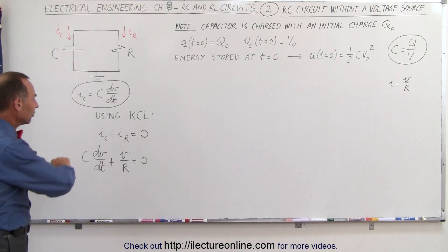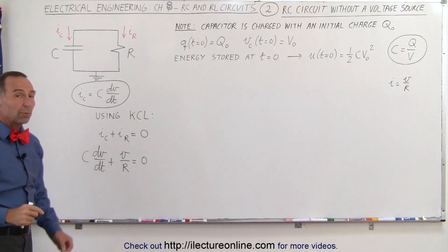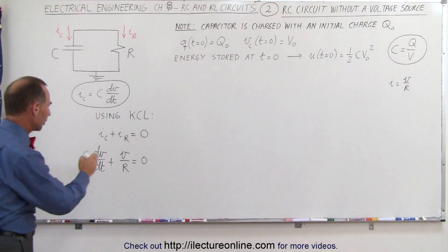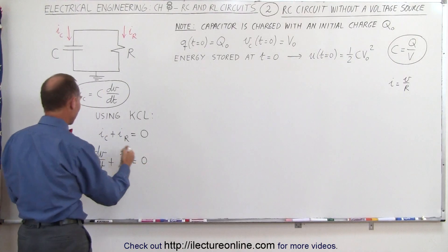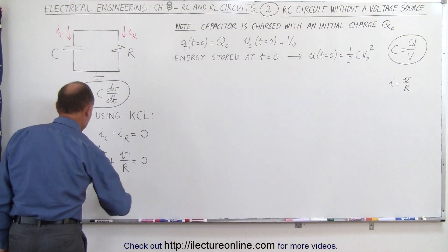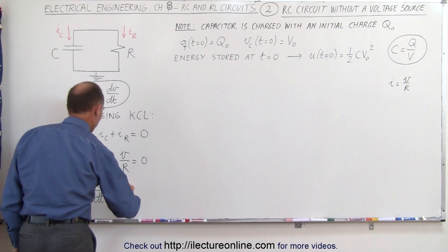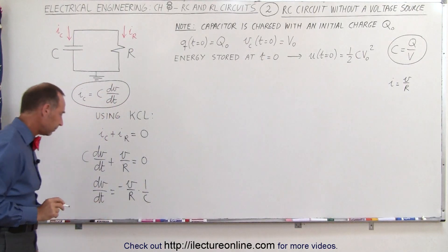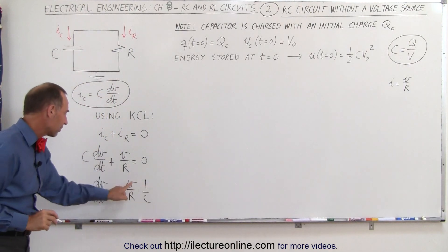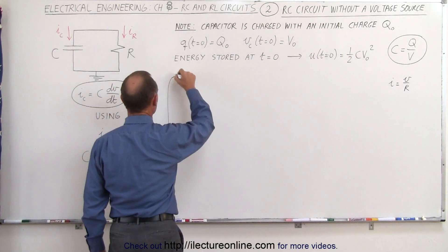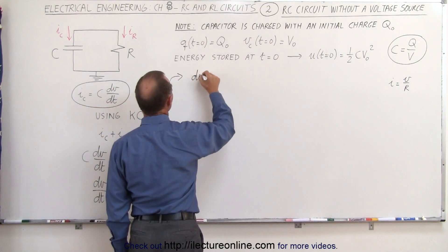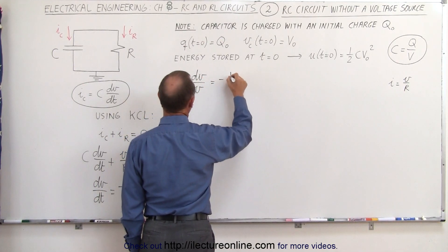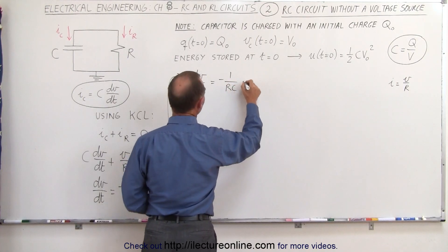Now we're going to solve this equation for V — this is obviously a differential equation, and we want to find the general solution. We move the V/R term to the right side and divide both sides by C, so dV/dt equals minus V over R times 1 over C. We can then place dt on the right and V in the denominator on the left, so that dV divided by V equals minus 1 over RC times dt.